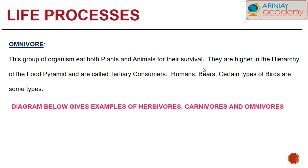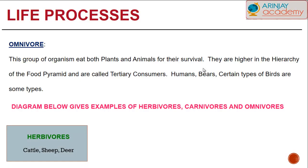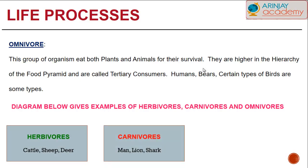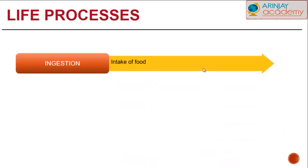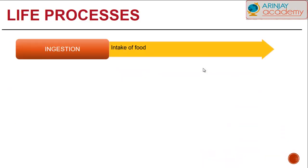The diagram will give us an example of the different types of herbivores, carnivores, and omnivores. Have a look at the herbivores, the carnivores, and the omnivores. Now we will look at how nutrition takes place and what the different steps or processes are.